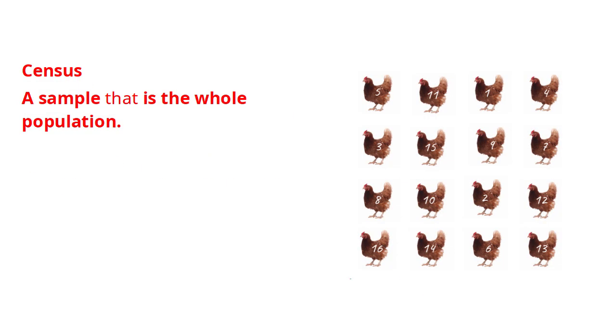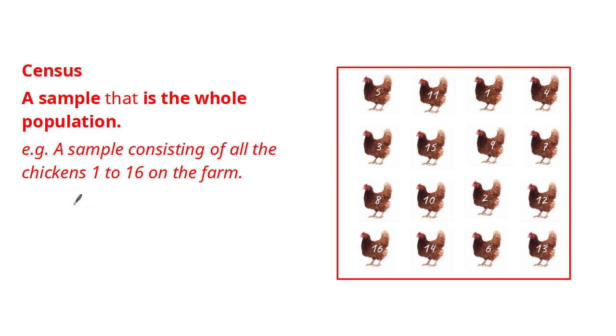The next method is called a census. A census is known as a sample that is the whole population. For example, the census in this case would be a sample consisting of all chickens numbered from 1 to 16 on the farm as illustrated on this diagram. A census is also a sample but instead of a subset of the population, it's a sample which takes into account every element inside the population. A census should not be confused for the population itself. A population is the set of items, but a census is a method of collecting all the items in the entire population.